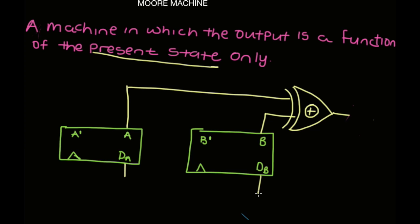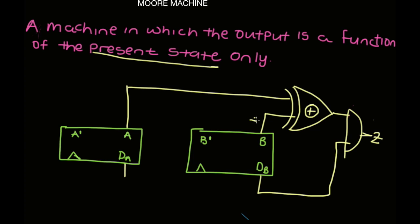Let me show you the Mealy machine difference. We add the input wire into the output logic. Now you can see that the new Z is a function of both the present state (PS) and the input. That is the Mealy machine, but today we're only talking about the Moore machine.